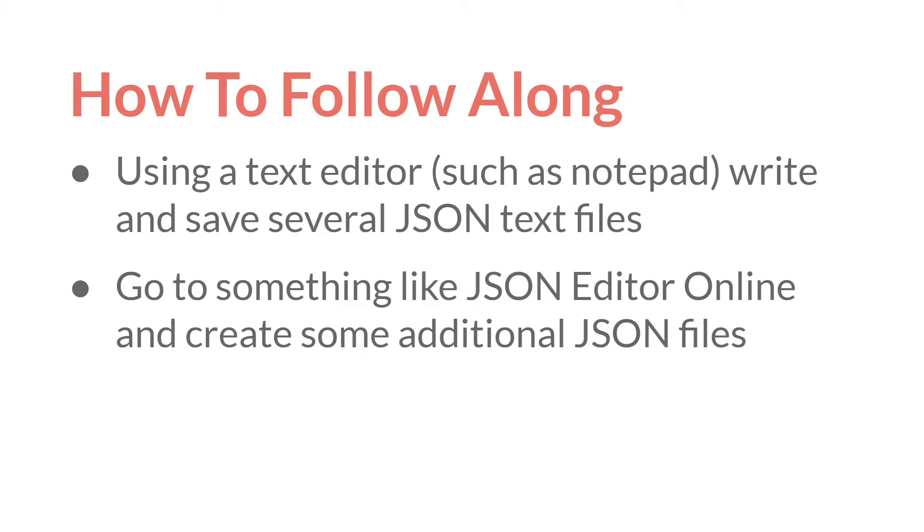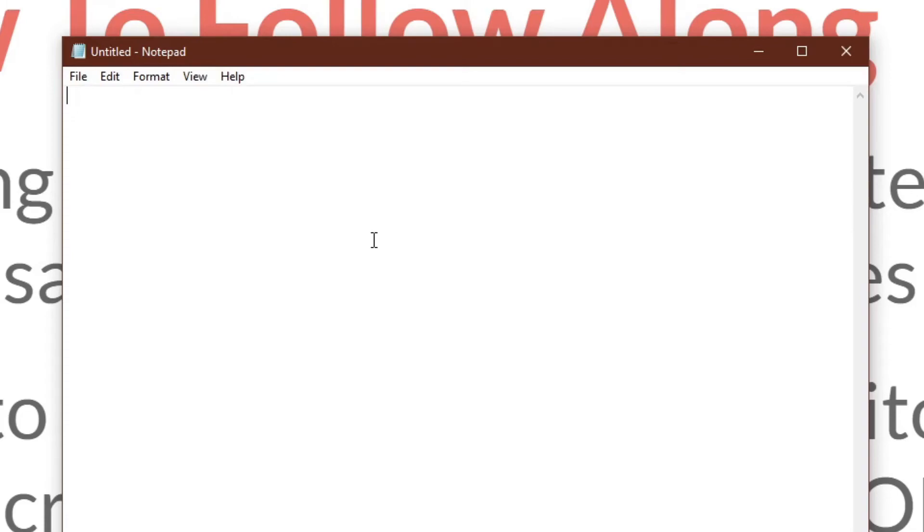In the next tutorial we'll work on importing these files into GameMaker Studio 2. So if I just load up Notepad here, I can create a JSON file very simply. Create the open brackets, close brackets, make a key, save some value to it. If it's not the final value, you add a comma, then you can add some more.